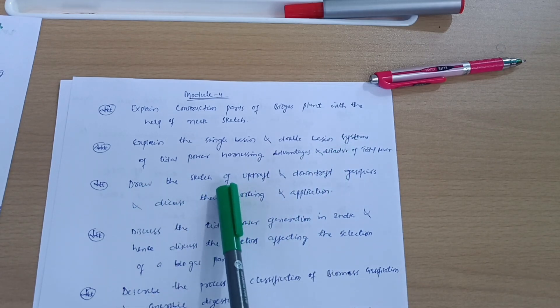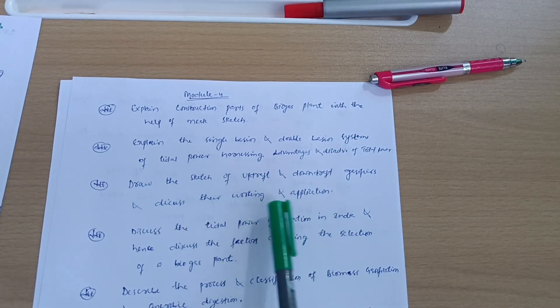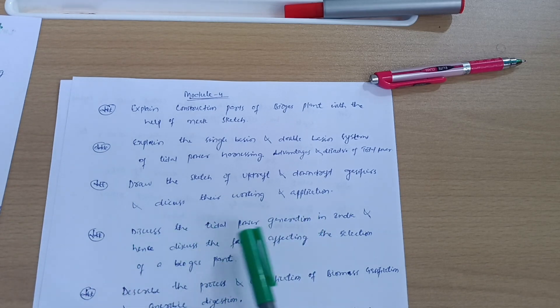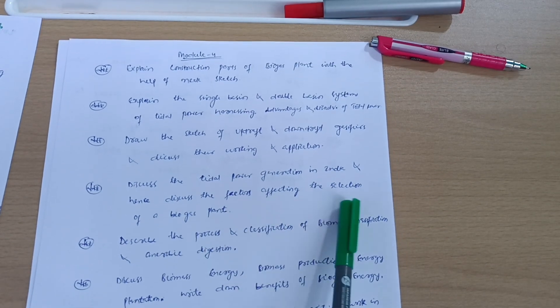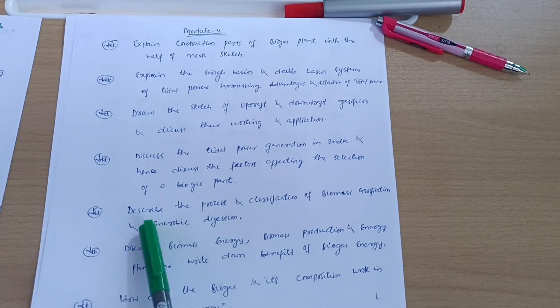Draw the sketch of updraft and downdraft gasifiers and discuss the working and its application. Discuss the tidal power generation in India and hence discuss the factors affecting the selection of the biogas plant.